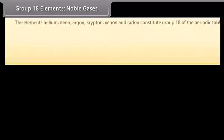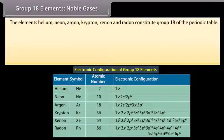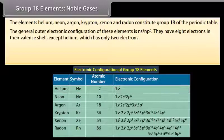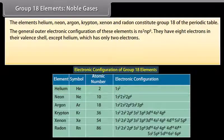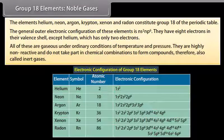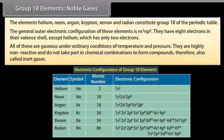Group 18 elements — noble gases: The elements helium, neon, argon, krypton, xenon and radon constitute Group 18 of the periodic table. The general outer electronic configuration is NS²NP⁶. They have 8 electrons in their valence shell, except helium which has only 2 electrons. All are gaseous under ordinary conditions of temperature and pressure. They are highly non-reactive and do not take part in chemical combinations to form compounds, and are therefore also called inert gases.